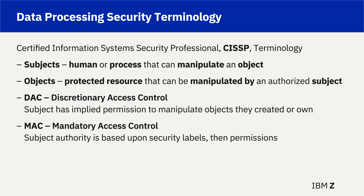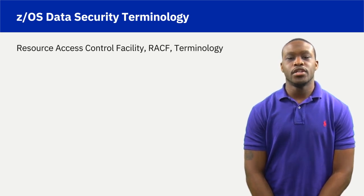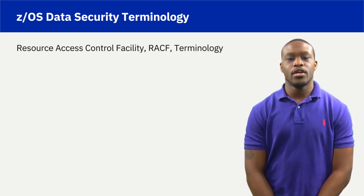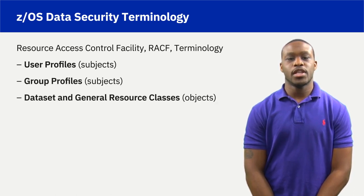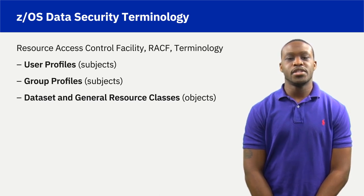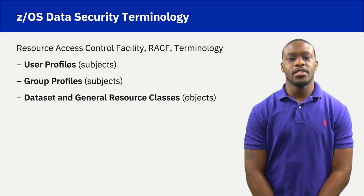These generally accepted data processing security terms — subjects, objects, DAC, and MAC — will be used during the presentation to assist with the context of ZOS-based data security terminology. RACF terminology includes the need to understand user profiles, group profiles, data set, and general resource classes. User profiles and group profiles quantify subjects that might request the ability to manipulate a protected object. Data set and general resource classes quantify the protected objects.